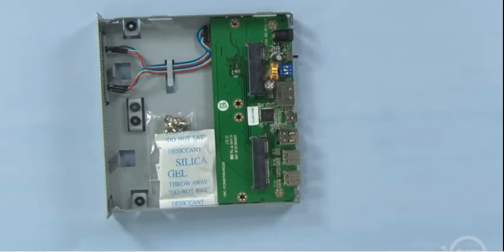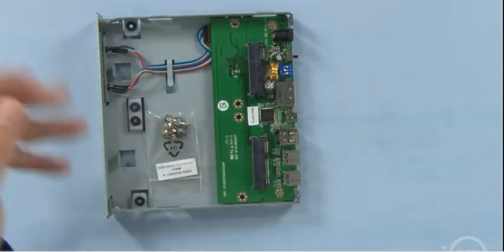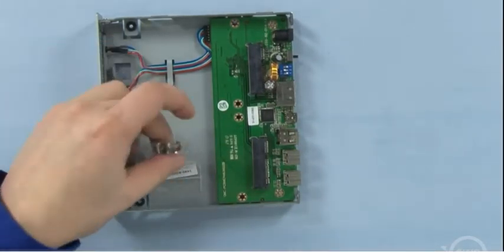Inside the tray itself will be two things. A packet of silica gel, which we can dispose of, and a small bag of screws.